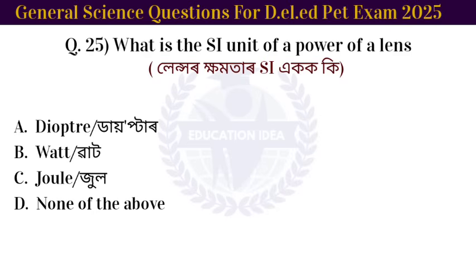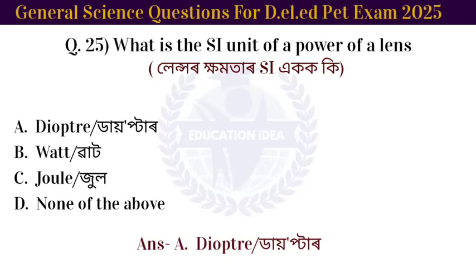Next question: what is the SI unit of the power of a lens? The answer is diopter.